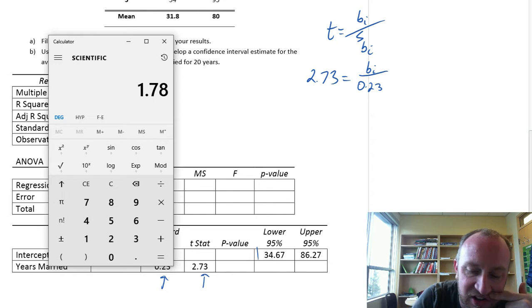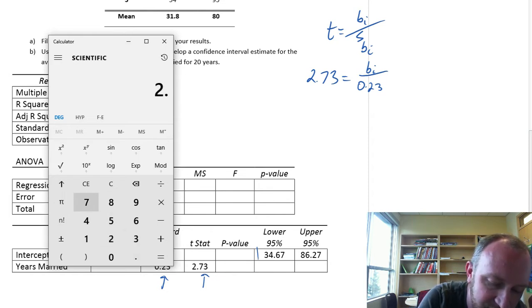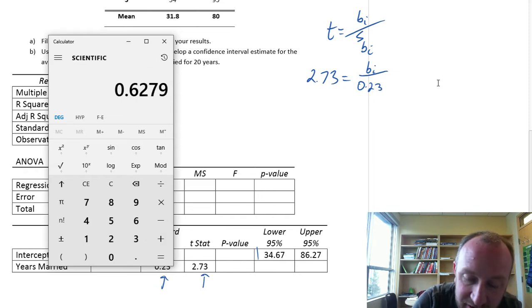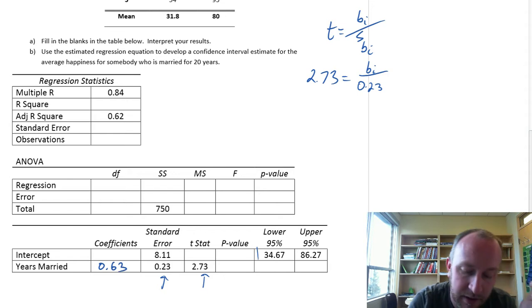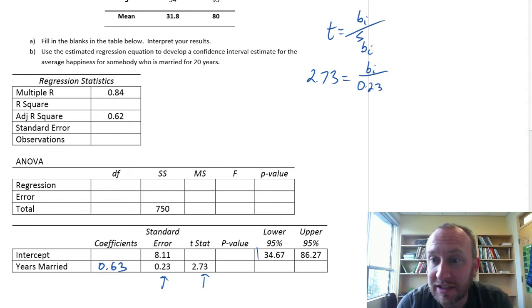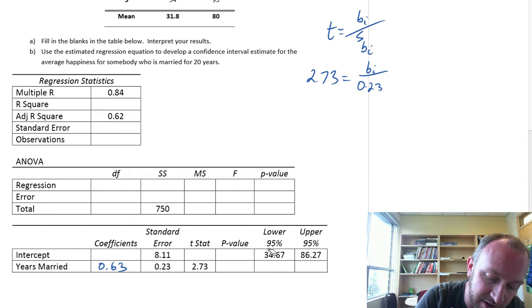If I just solve this for that coefficient, that'll be 2.73 times 0.23. So here I have a slope coefficient of 0.63. Didn't take nearly as much time that time, did it? That's a much quicker way.